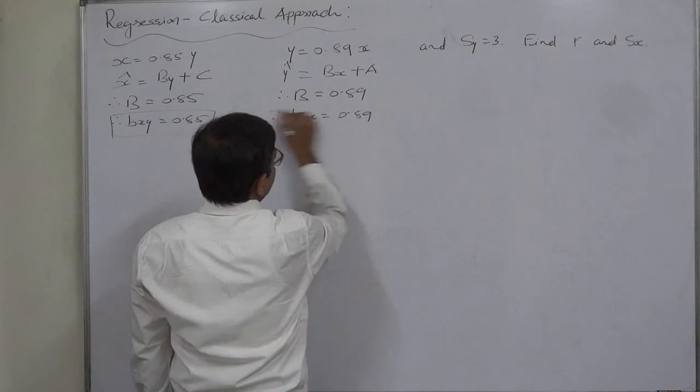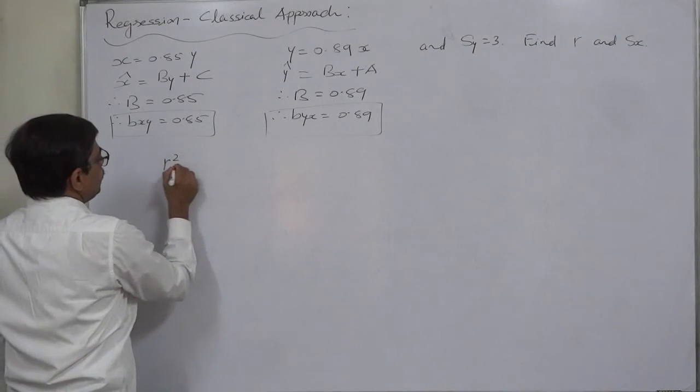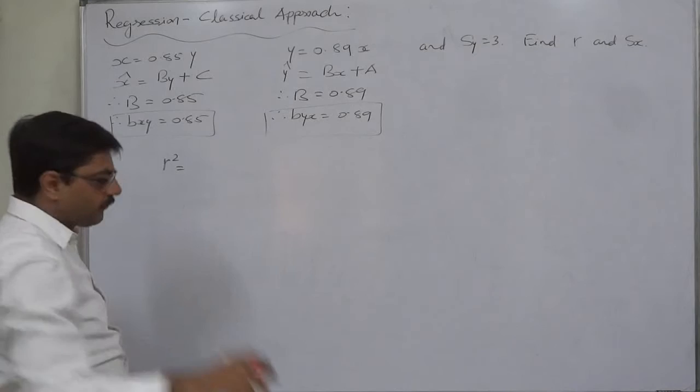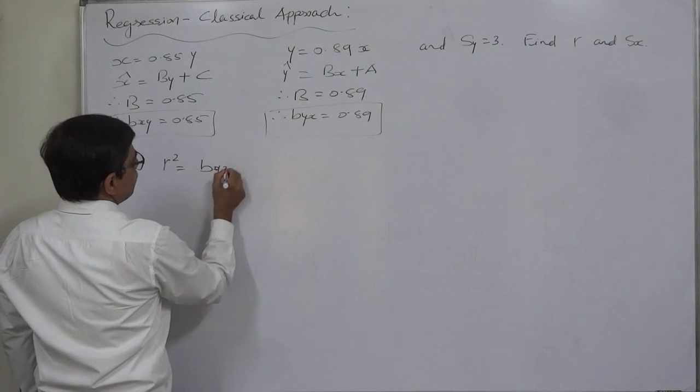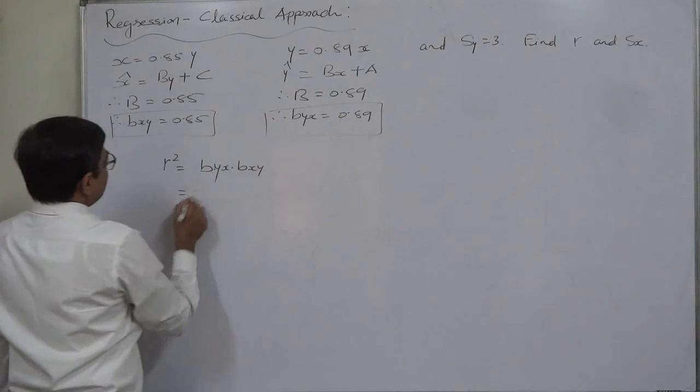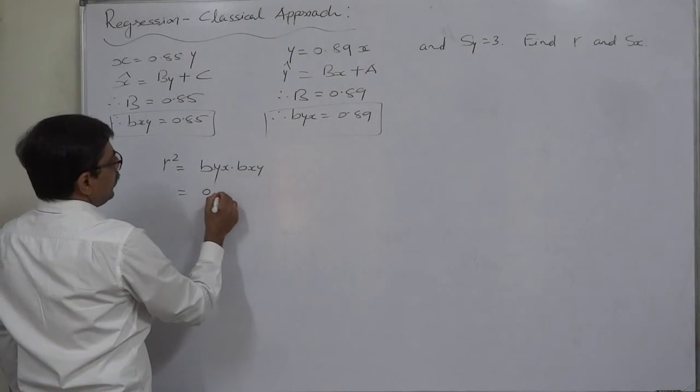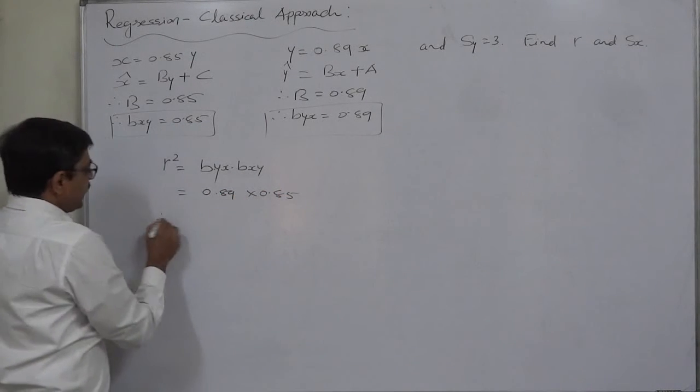So we have the values of byx and bxy, and we know that coefficient of correlation, the square value of coefficient of correlation, is byx into bxy or bxy into byx, that is 0.89 into 0.85.